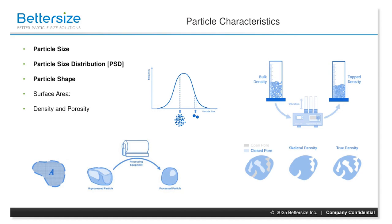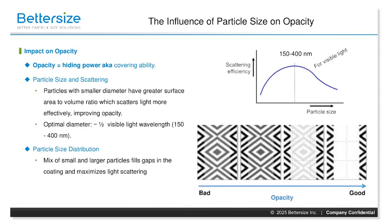Particle shape refers to the geometric characteristics of individual particles, such as their form, roundness, and aspect ratio. Opacity, or hiding power, is basically a coating's covering ability. Smaller particles have a larger surface area to volume ratio, which allows them to scatter light more effectively, and this increased scattering enhances the hiding power of the coating.